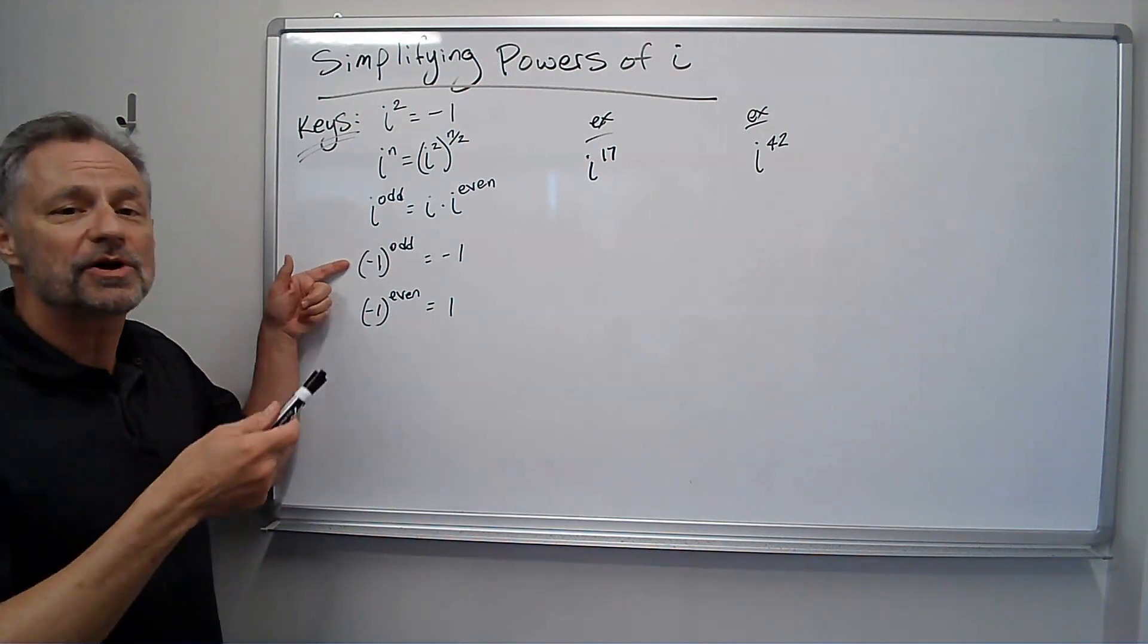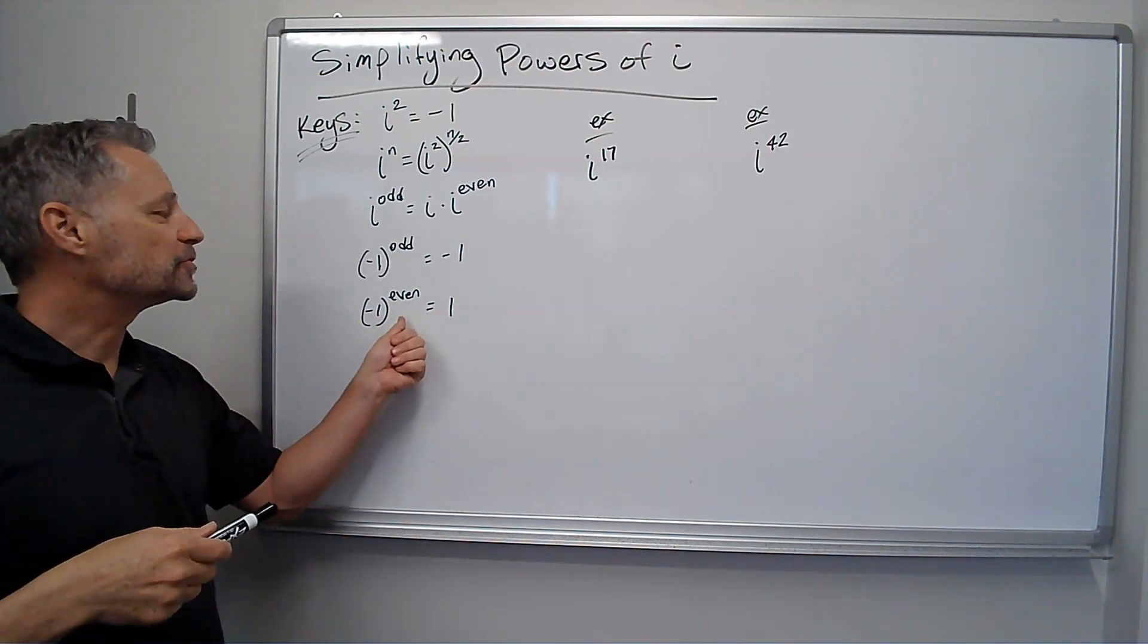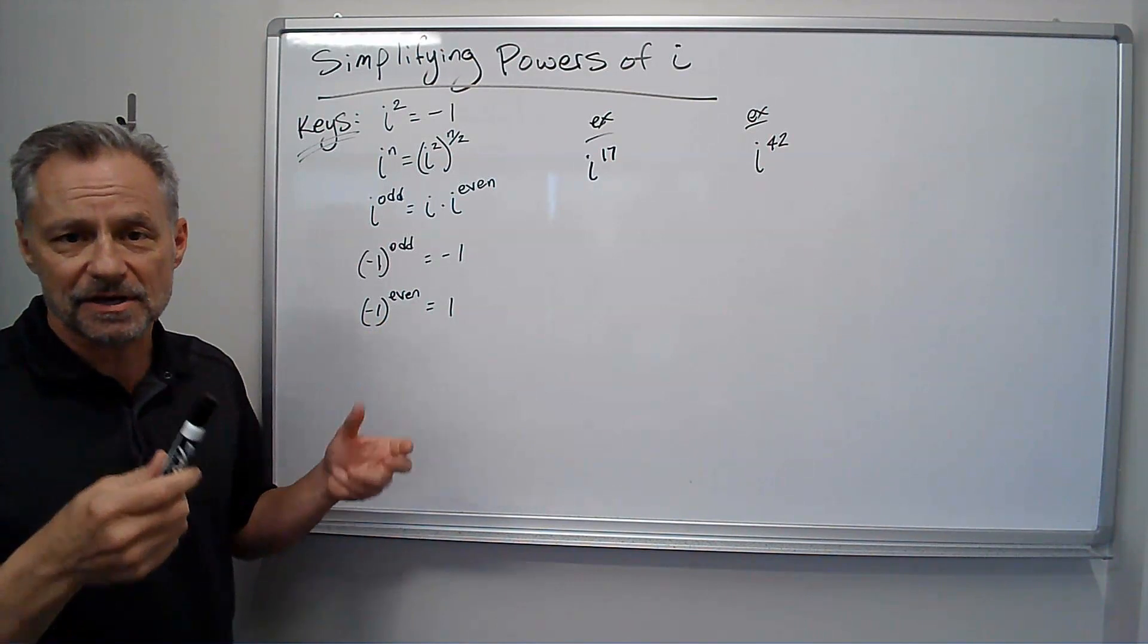Also remember negative 1 to an odd power, negative 1 to the third, negative 1 to the fifth, is just equal to negative 1. And negative 1 to an even power, say negative 1 squared, is just positive 1. The negatives cancel out in pairs.